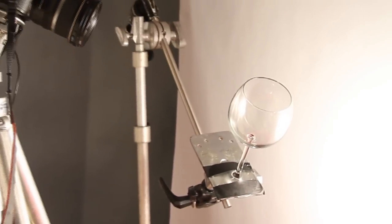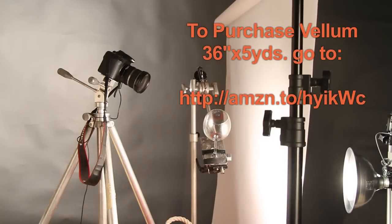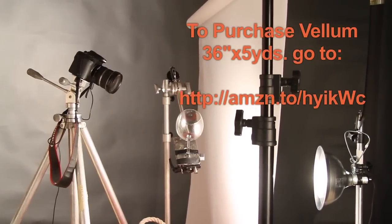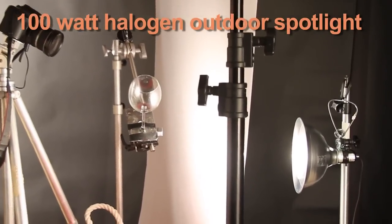Well here we have a glass taped to a boom stand. Our camera's set in front. We're using a roll of vellum between the light and our glass. And our light source is a 100 watt halogen outdoor spotlight in a clamp lamp.